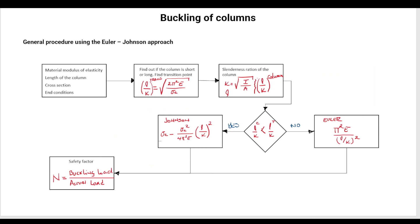To summarize the procedure: it's a clear decision point — if your column's slenderness is after the transition point, use Euler's formula; if it's before, use Johnson's formula. Once you have the buckling or permissible load, you can calculate your safety factor and your design margin. Thanks for attending. In another video we'll discuss possible failure causes for columns — it's quite interesting to see why columns fail.